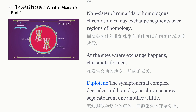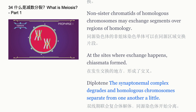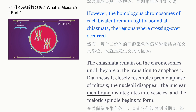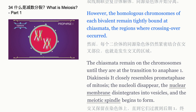Diplotene: the synaptonemal complex degrades and homologous chromosomes separate from one another slightly. However, the homologous chromosomes of each bivalent remain tightly bound at chiasmata — the regions where crossing over occurred. The chiasmata remain on the chromosomes until they are at the transition to anaphase 1.